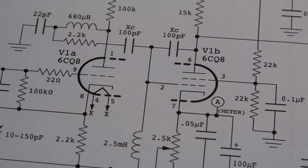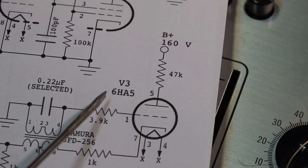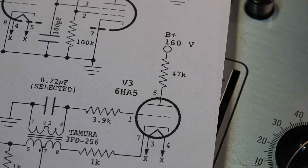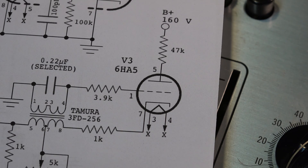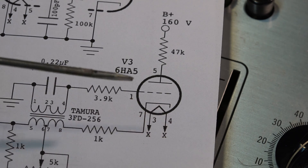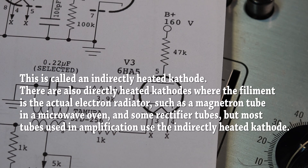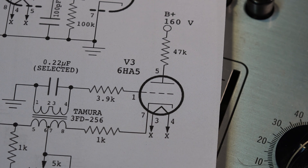This one here on this part of the schematic is a triode, a 6HA5. You've got a couple of components to this. You've got your heater, which provides heat to the cathode. Electrons get emitted from the cathode and they're drawn towards the anode. The anode is supplied with your B+, which is typically anywhere from 160 to about 380 volts, depending on the power of the amplifier.